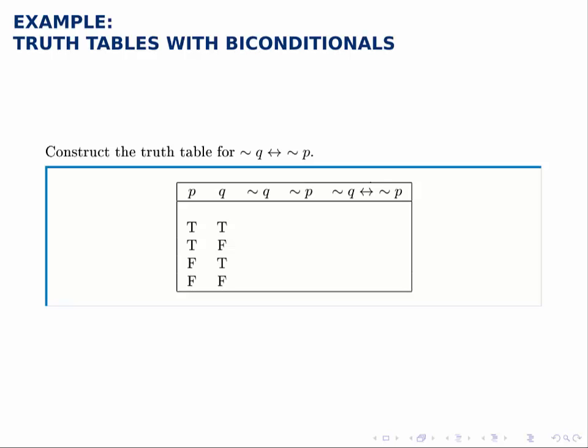Remember the biconditional is true whenever its components agree. In other words, when both of them are true or both of them are false. If they disagree, one being true and the other being false, then the biconditional fails. So it's true when they agree. First though, let's build the not Q and not P columns.